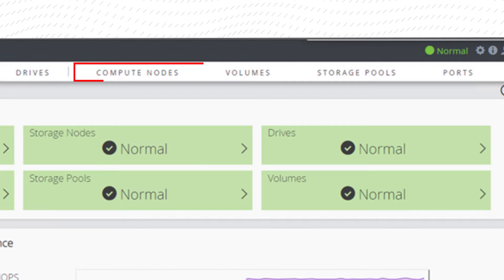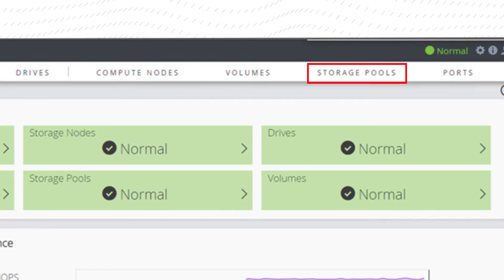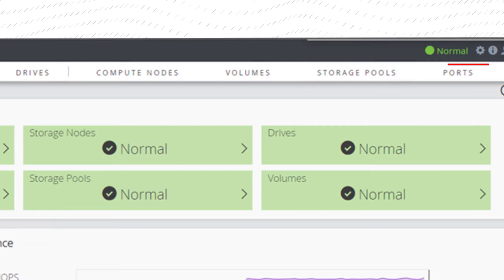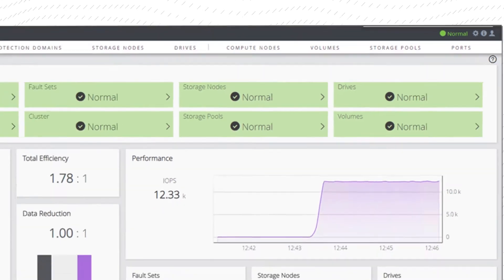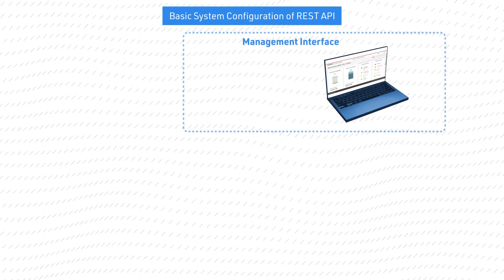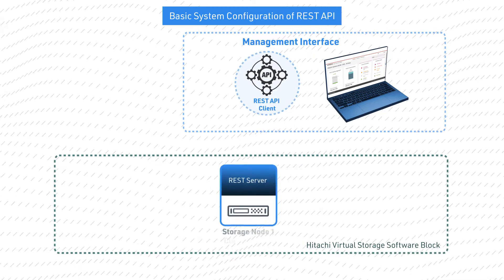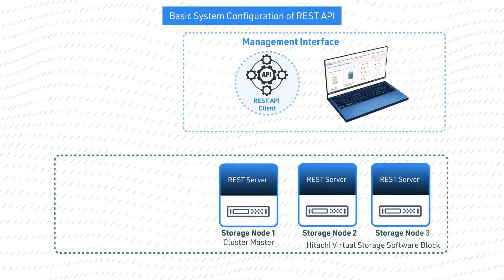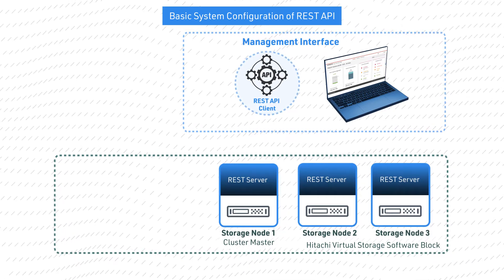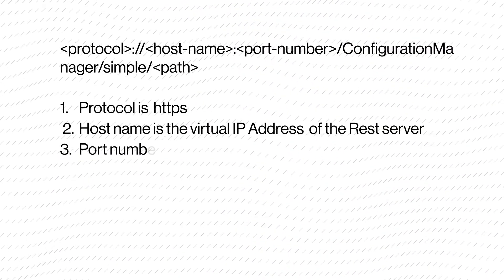Additional tabs provide access to drives, client servers, volumes, pools, and ports for either iSCSI or Fibre Channel. REST API commands provide another way to manage VSS Block clusters and can be scripted. Note that all commands generated from the GUI or the CLI are ultimately REST API calls. Here is the basic form of a REST API call.